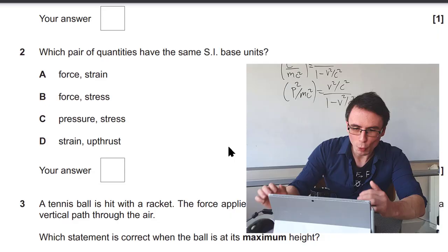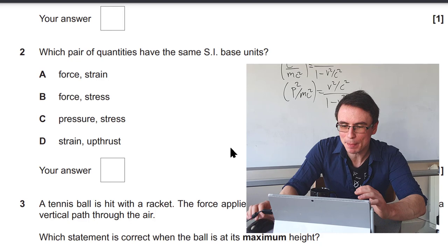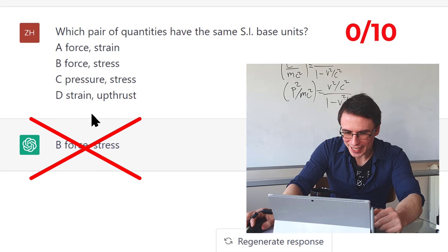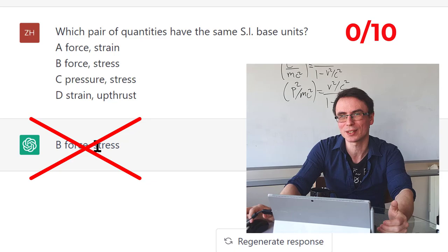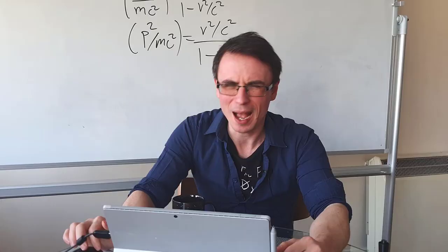Question 2: Which pair of quantities have the same base SI units? That's really interesting. Wrong again. So it's saying that force and stress have the same units. However, stress is also force per unit area. The correct answer here is C, pressure and stress. I'm generally quite surprised it's getting these wrong.